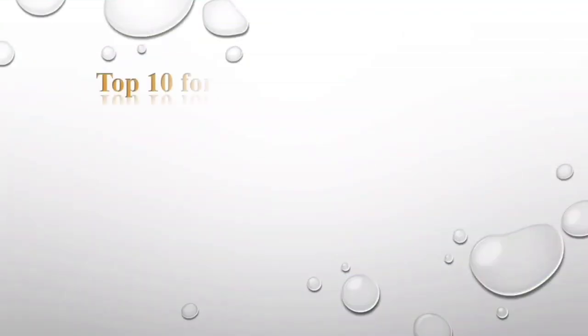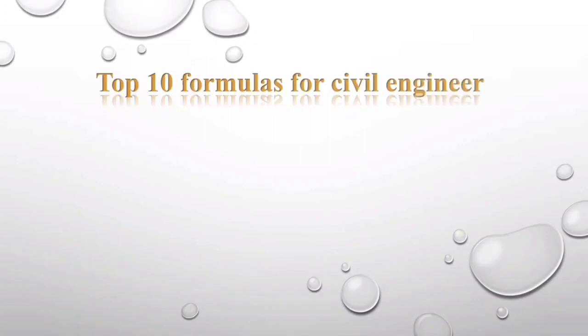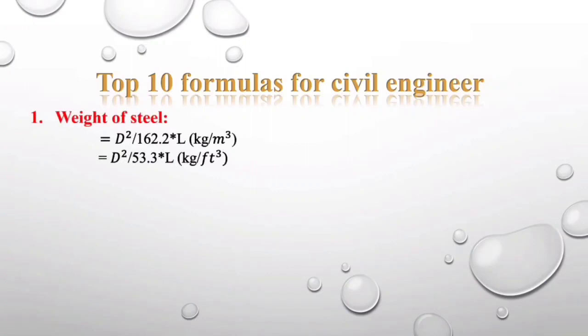Welcome to the channel. Today's lecture is about the top 10 formulas for every civil engineer. The first one is for finding the weight of steel — a very basic formula. It is d squared divided by 162.2 multiplied by length in kg per meter, or d squared divided by 53.3 multiplied by length in kg per feet.